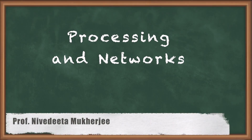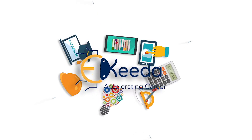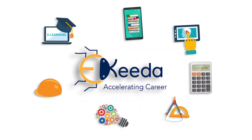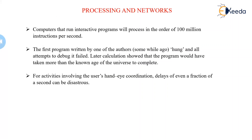Let us talk about processing and networks. This term refers to net computers that run an interactive program, processing in the order of 100 million instructions per second. That sounds like a lot, yet like memory it will soon be used up. Calculations showed that a program would take longer than the known age of the universe to complete — so it's kind of a riddle.